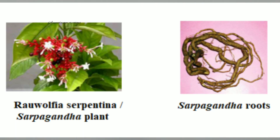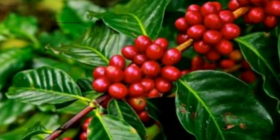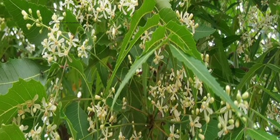Next, Rauwolfia serpentina — it is a snake root plant. Its root and bark has the reserpine alkaloid, which is used as an antidote for snake bite. Next, Coffea arabica, the coffee plant — its seeds have an alkaloid called caffeine which acts as a central nervous system stimulant that activates our brain. Next, Azadirachta indica, the neem plant — every part of this plant has a chemical called nimbin which is used as an antiseptic to kill germs.